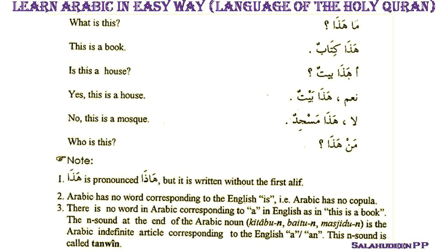Please note that there is no word in Arabic similar to 'is' in English. The third thing is there is also no word in Arabic corresponding to 'a' or 'an' in English — as in 'this is a book'. So there is no word for 'is' and no word for 'a' or 'an' in Arabic.